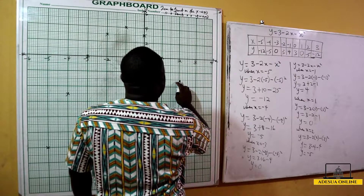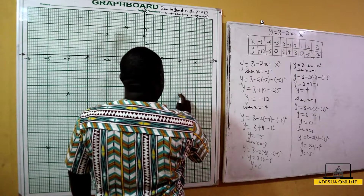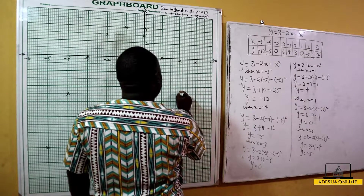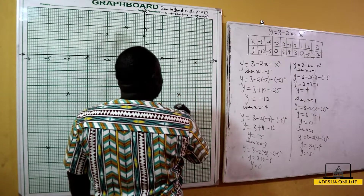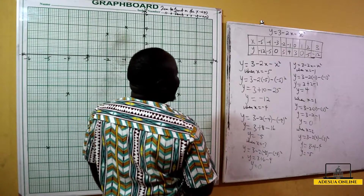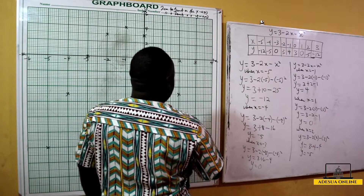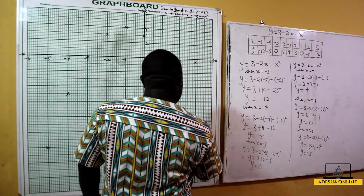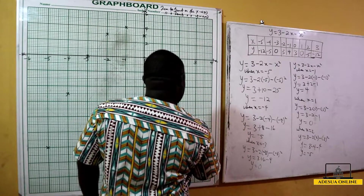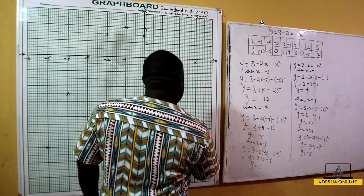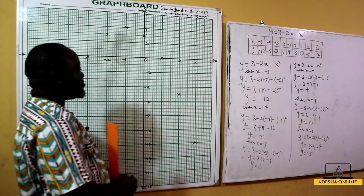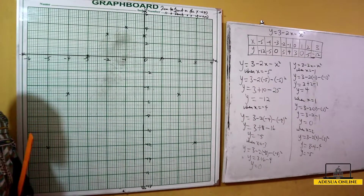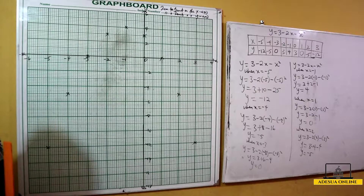When x is 0, y is 3 — mark that point. When x is 1, y is 0 — mark 1, 0. When x is 2, y is negative 5 — between negative 4 and negative 6, mark 2, negative 5. When x is 3, y is negative 12 — mark 3, negative 12.